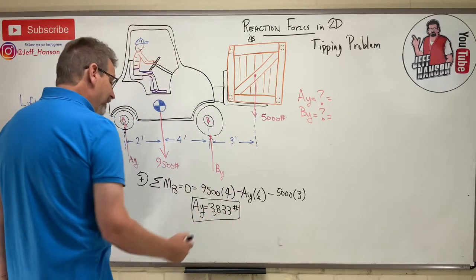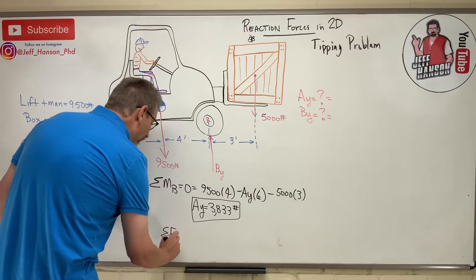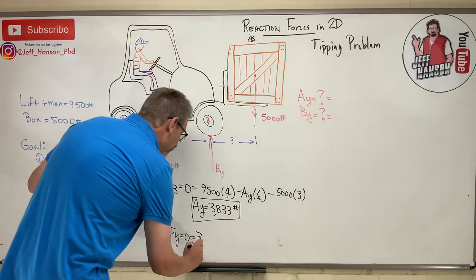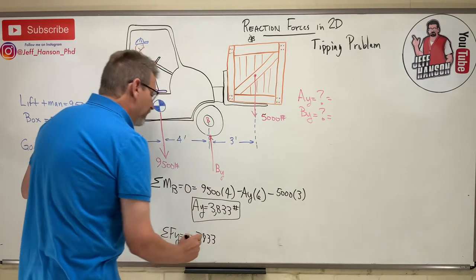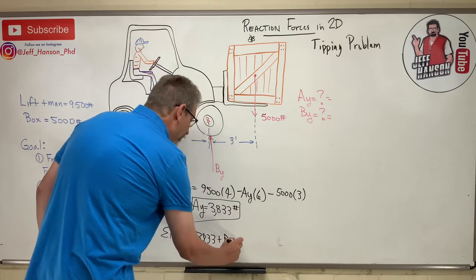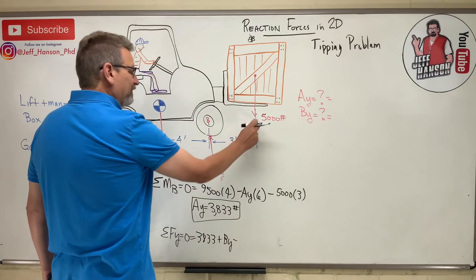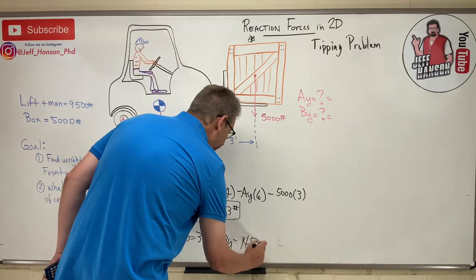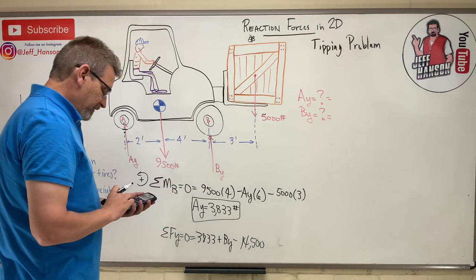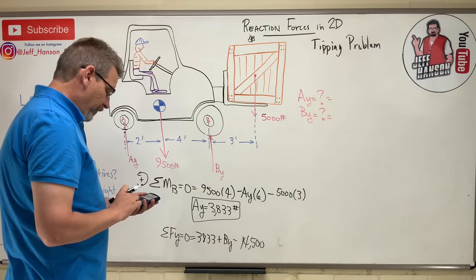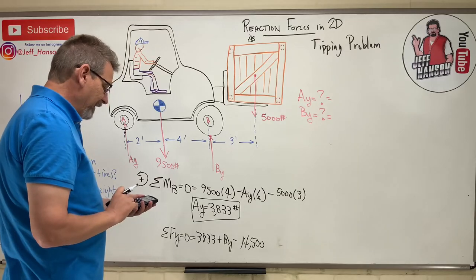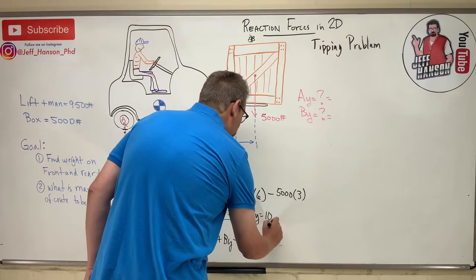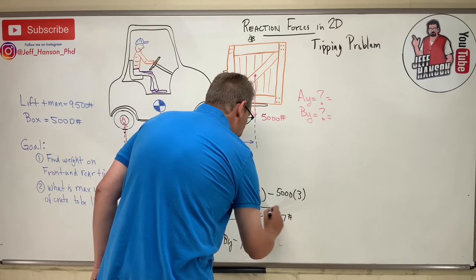And how do you find By then? Well, just a simple sum of the forces in the y direction would get that. And you have what? You have Ay which is 3833 plus By, so plus By minus 9,500 plus 5,000 which is 14,500 minus 3833 leaves 10,667. Okay, so By equals 10,667 pounds.